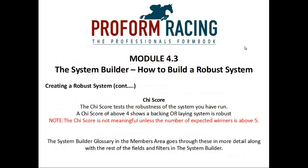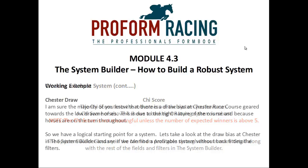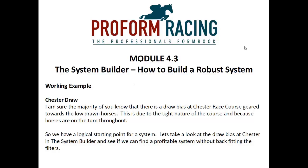The chi score tests the robustness of the system you have run. A chi score of above four shows a backing or laying system is robust. Note that the chi score is not meaningful unless the number of expected winners is above five. The system builder glossary in the members area goes through these in more detail, along with the rest of the fields and filters in the system builder.